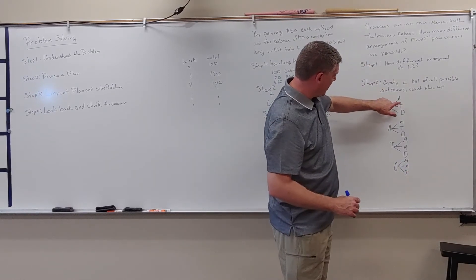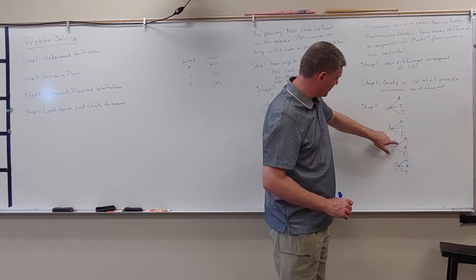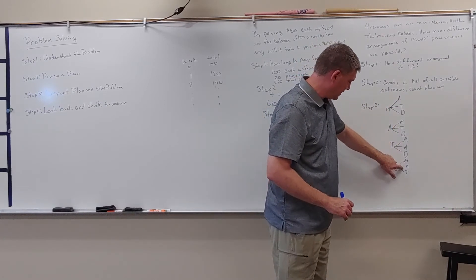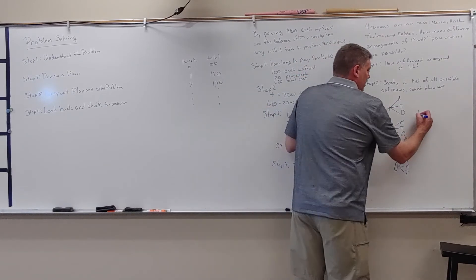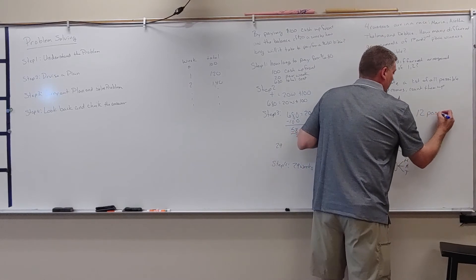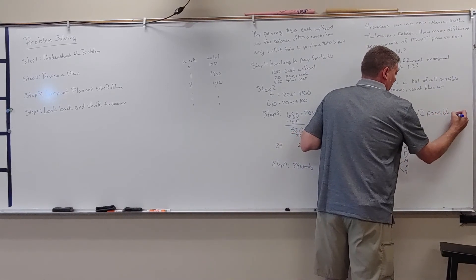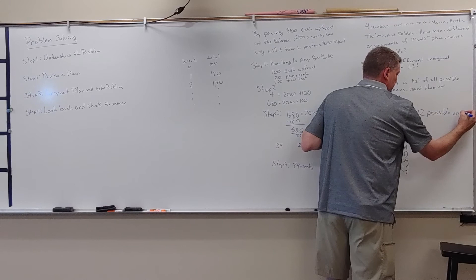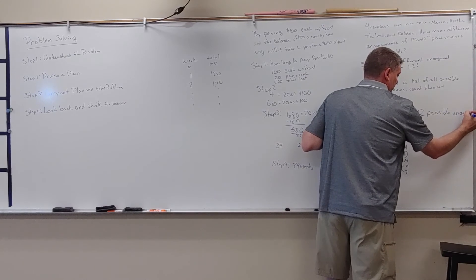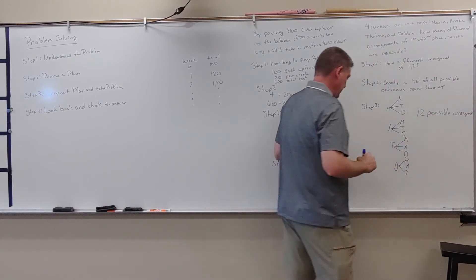And Debbie. And then last is Debbie could have Maria, Aretha, and Thelma. So I'm going to count these all up. One, two, three, four, five, six, seven, eight, nine, ten, eleven, twelve. Twelve possible arrangements.